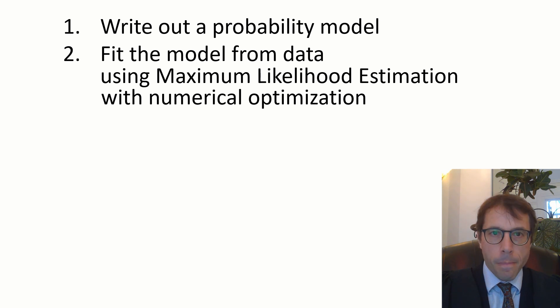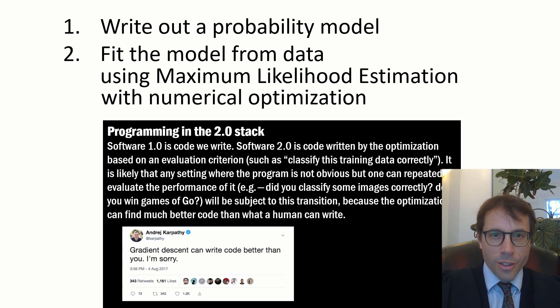There's one particular numerical algorithm called gradient descent which is the workhorse of all deep learning. Here's a nice quote about it: gradient descent can write code better than you. Software 1.0 is code we write. Software 2.0 is code written by optimization. What the author here means is parameters for a neural network trained according to maximum likelihood estimation—that's what he means by software 2.0.